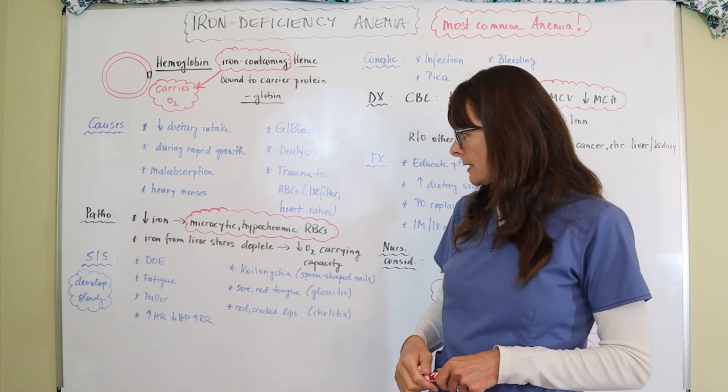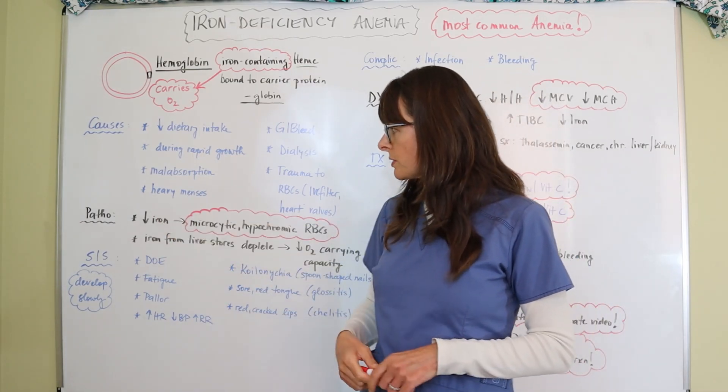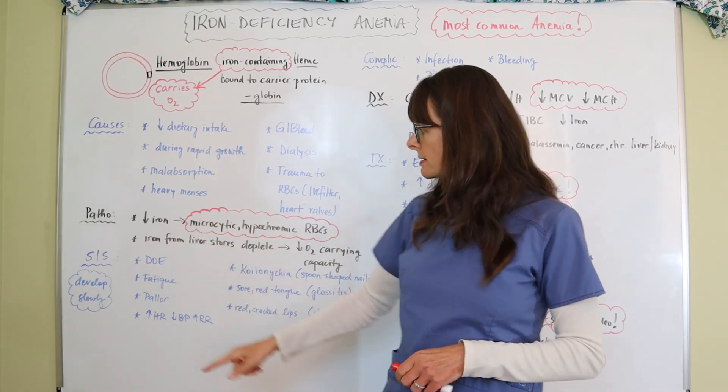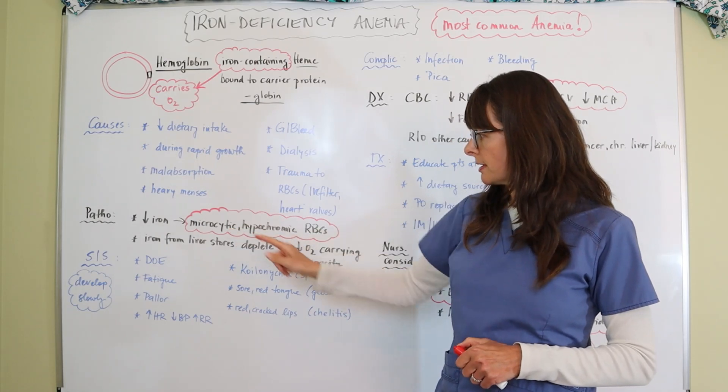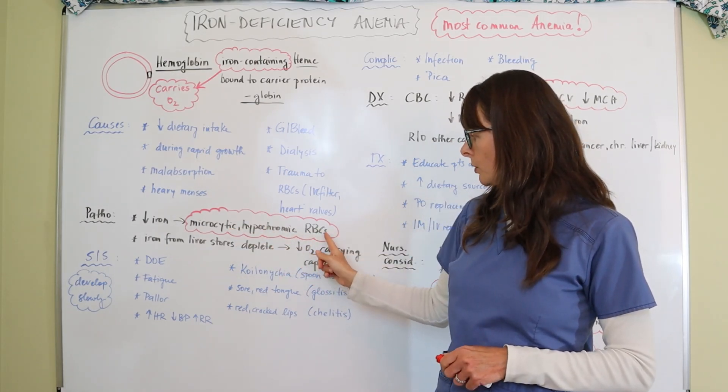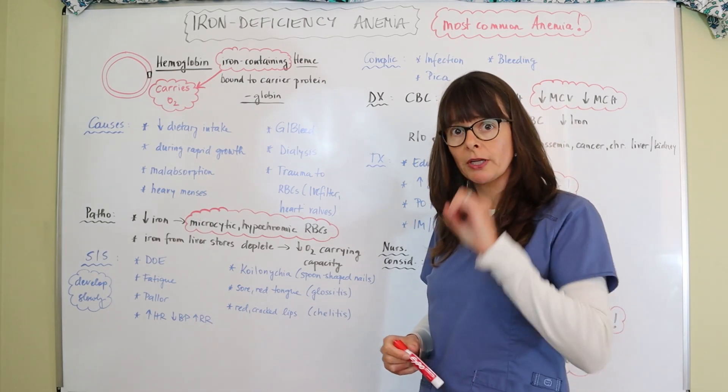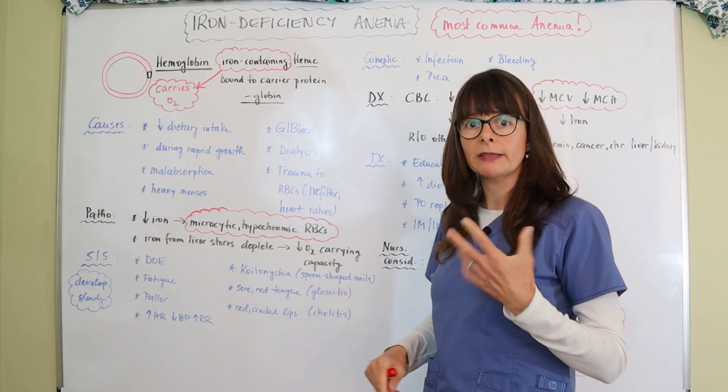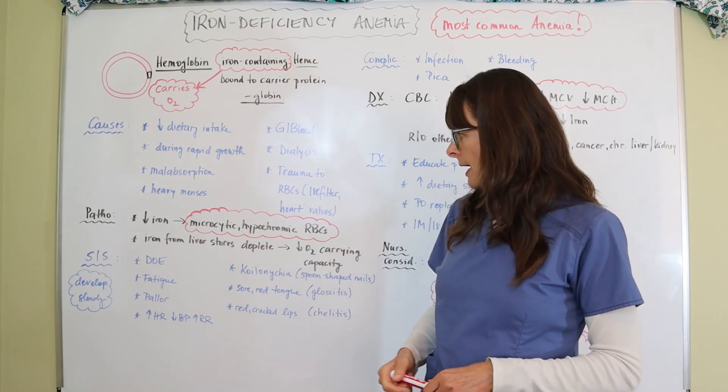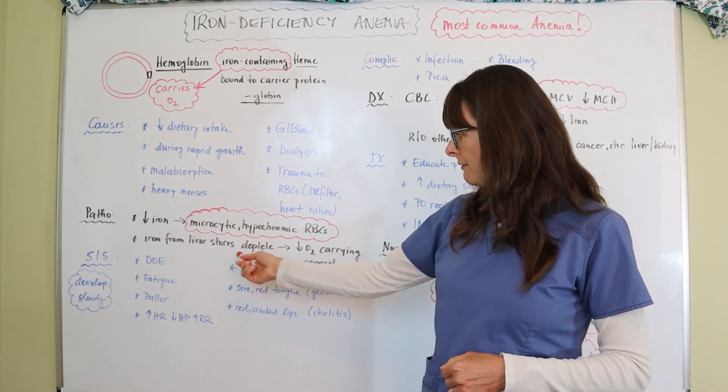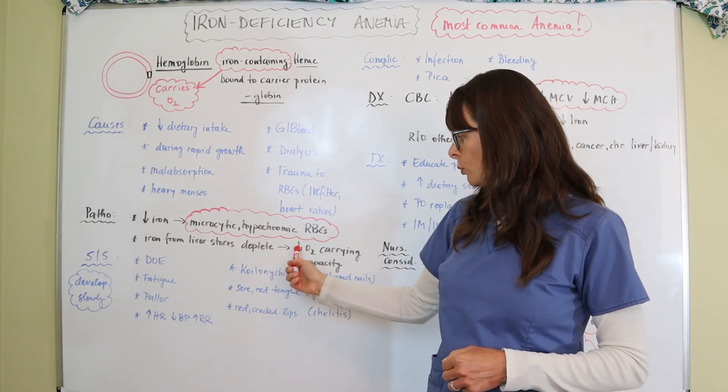From a pathophysiological standpoint when we have decreased iron in our bodies it leads to microcytic and hypochromic red blood cells, and that means that the cells are smaller than expected and hypochromic, they're also more pale in color. The iron gets pulled from the stores in the liver but as they deplete we lose our oxygen carrying capacity and then the patient starts to have symptoms.